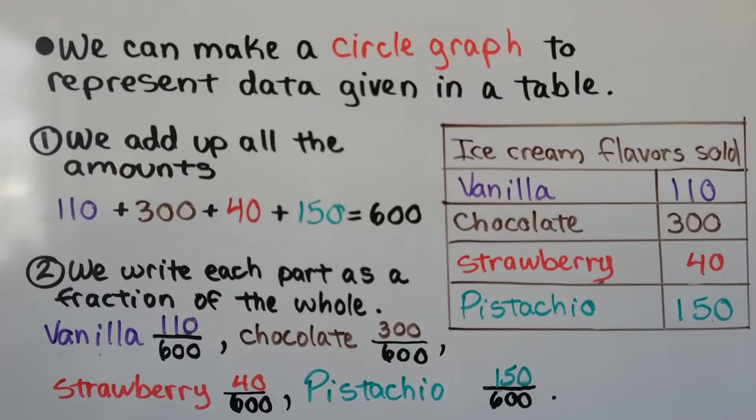We write each part as a fraction of the whole. So vanilla is 110 over 600. Chocolate is 300 over 600. Strawberry is 40 over 600. Pistachio is 150 over 600.